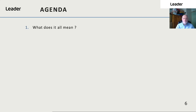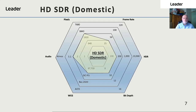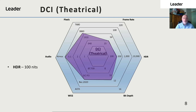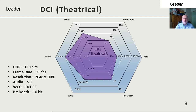For HD standard dynamic range we have 100 nits, 24 frames per second, 1920 by 1080 resolution, stereo audio, 709 colour space and an 8-bit depth. For cinema we still have 100 nits, 25 frames per second, but a slightly wider resolution of 2048 by 1080, also known as 2K, audio 5.1, a wider colour gamut DCI-P3 and a 10-bit depth.